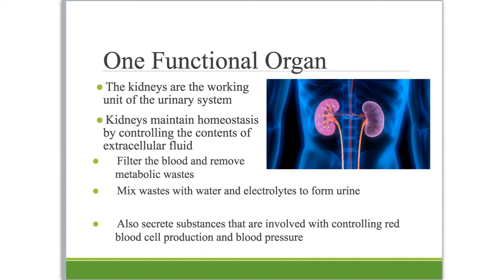The urinary system really only has one functional organ, and that is your kidney. Everything else is just storage and transport. The kidneys' job is to maintain homeostasis throughout the whole body by controlling what's in the fluid that's outside of your cells — that includes your blood, the lymph moving through the lymphatic system, and the fluid in between cells.